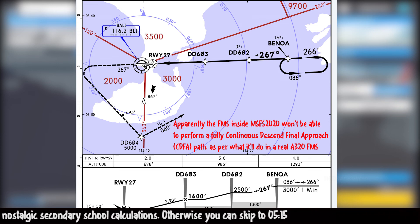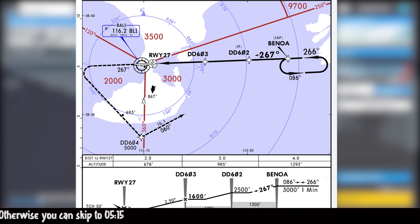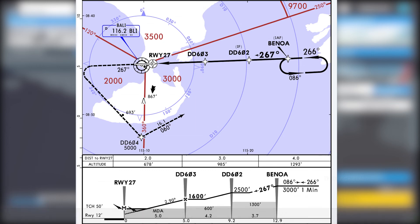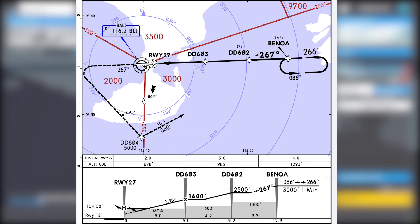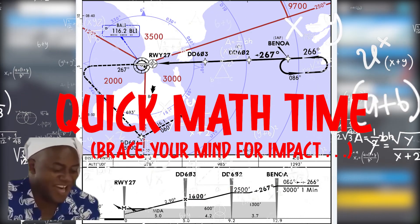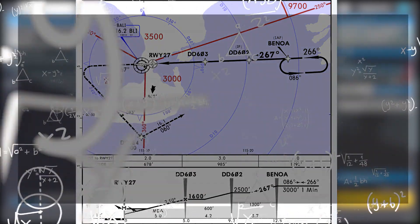After Delta Delta 603, you follow a descent angle of 2.9 degrees. We are going to do the step descent on the simulator because the flight management system inside the simulator is not designed to cater for a constant descent final approach path, as compared to a real aircraft. In a real aircraft with an updated FMS, it will calculate the constant descent flight path as required.